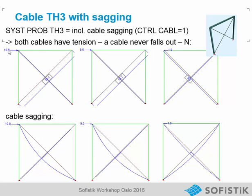In the first load case at 10 kN, the first cable is working, but you also see a little blue tension in the other cable. If we reduce to 9 kN, it is nearly the same effect. But if we have only 1 kN from the right, we see that now really both cables have a normal force. Looking at the cable sagging, in the first stage the first cable is nearly straight, while the other cable that has no or only a little normal force has a big inner sagging.